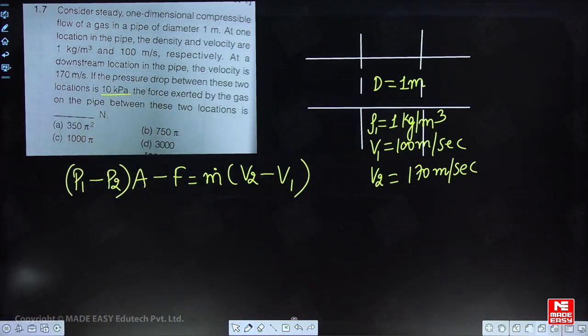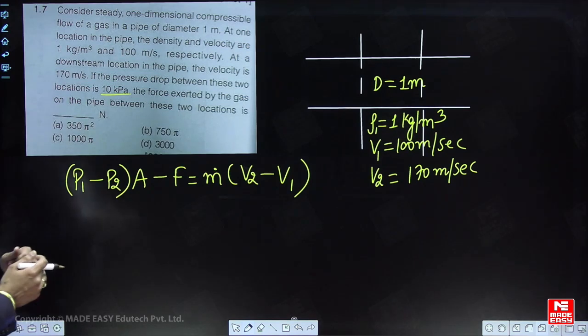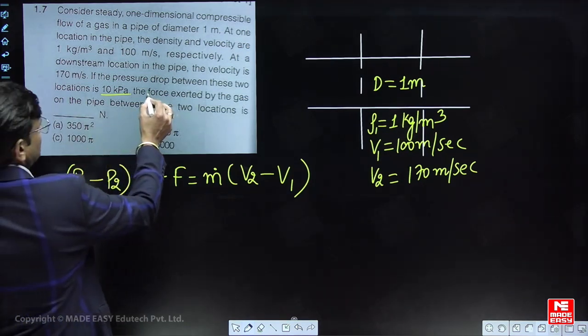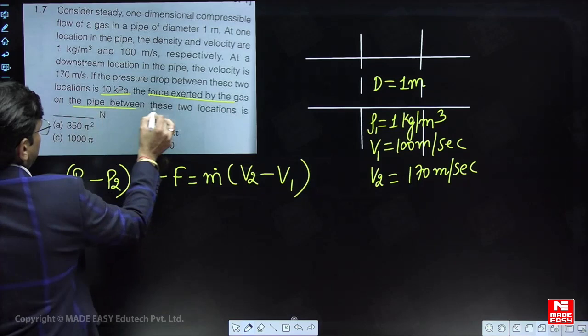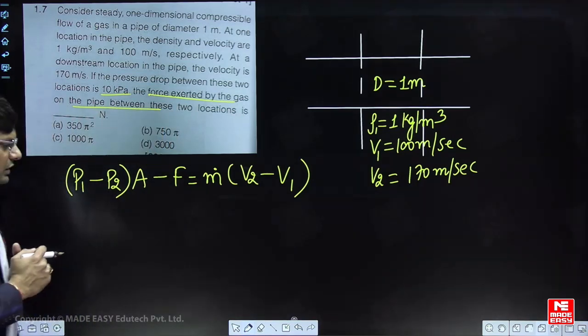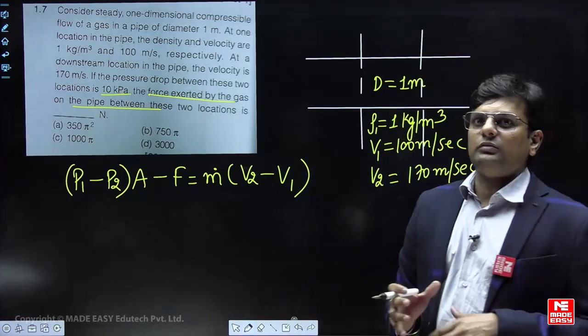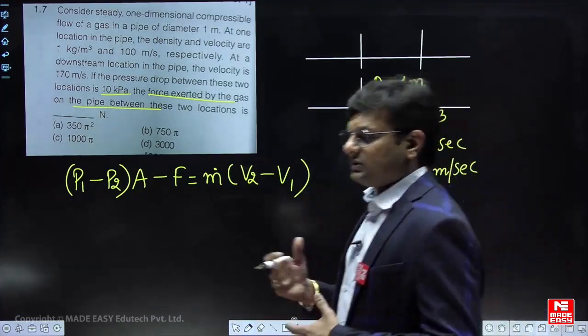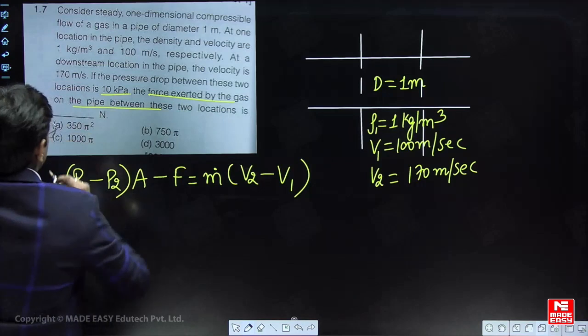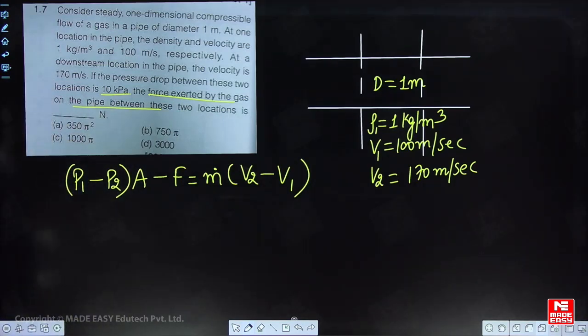Now in this question they have asked the force exerted by the gas on the pipe between these two locations. It means you have to consider the friction force that is considered by the system as a resistance force.